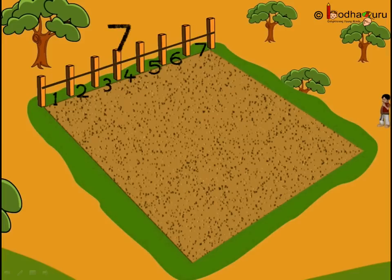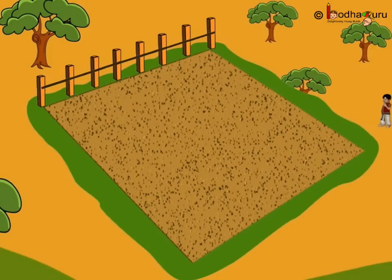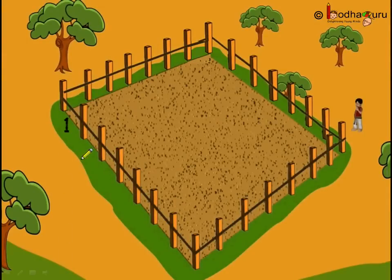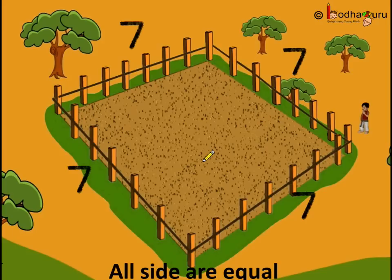7 pieces. Next he put the fence on the other side — one side used 7 pieces of wire. Then he did fencing for the next side: 1, 2, 3, 4, 5, 6, 7. This side also used 7 pieces of wire. So for each side of the farm he used 7, 7, 7, and 7 pieces of wire. In total he used 28 pieces of wire, because all sides are equal and we need to add all of them to get the total number of wire pieces used.